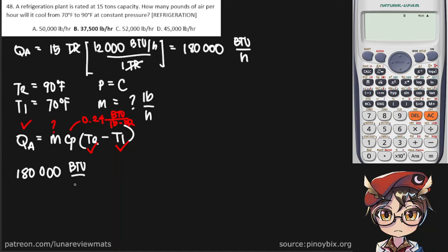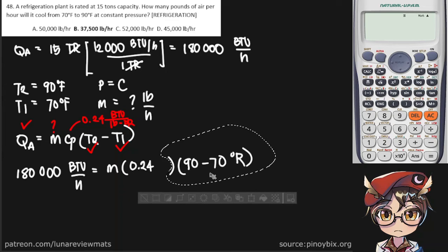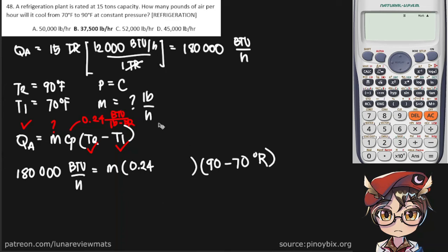So that's QA. This is 0.24. Final temperature is 90 minus 70. Now, the reason I didn't convert this into absolute is that this is a difference, and you will get the same value in Rankine regardless. So we might as well put degrees Rankine here. Let's include the unit for our specific heat constant so we don't get confused. This is BTU per pound mass degrees Rankine.